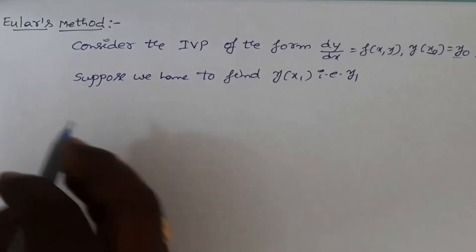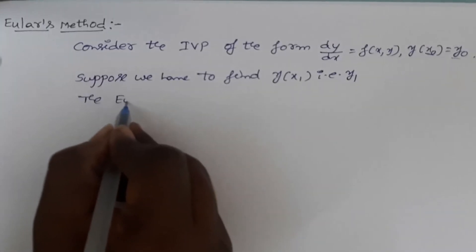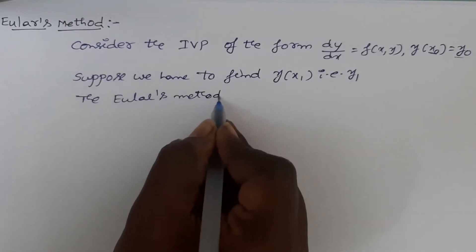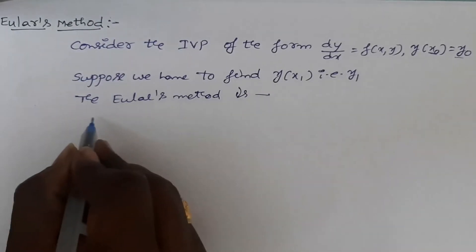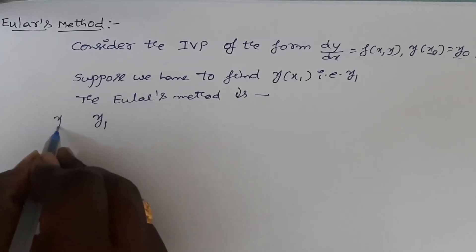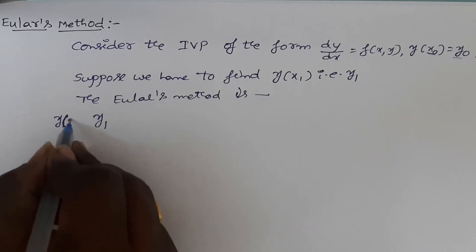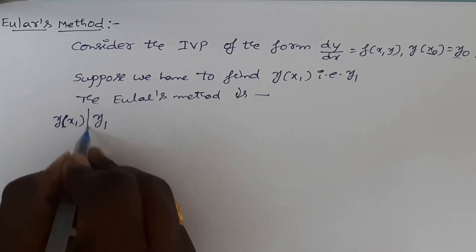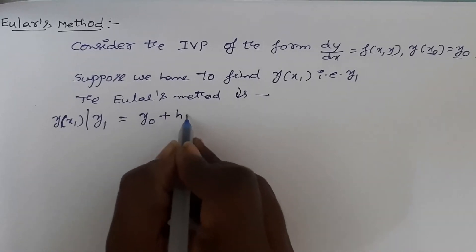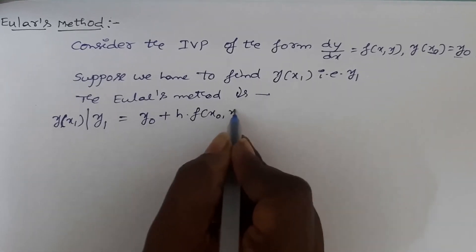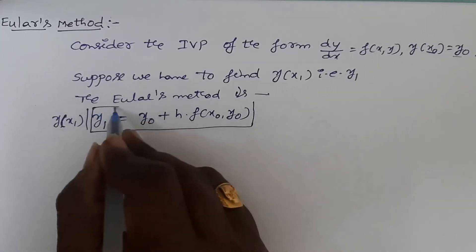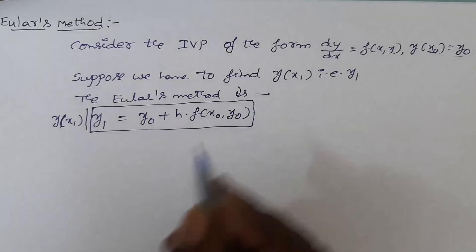Then by Euler's method, y₁ — that is y at x₁ — the formula for y₁ is equal to y₀ plus h into f of x₀ comma y₀. This is the formula to find out y₁ using Euler's method.